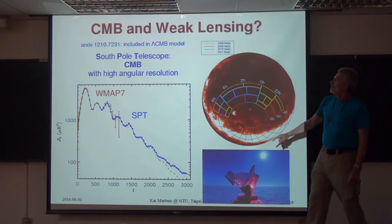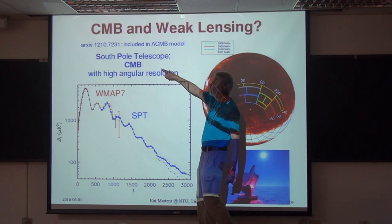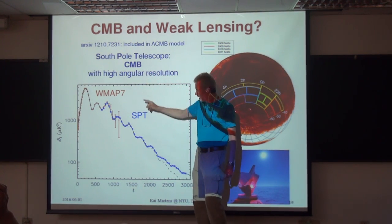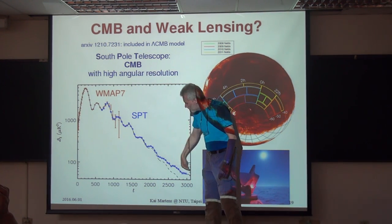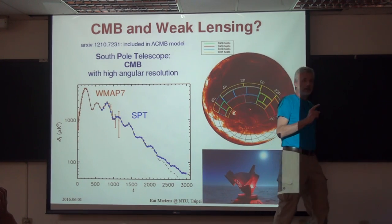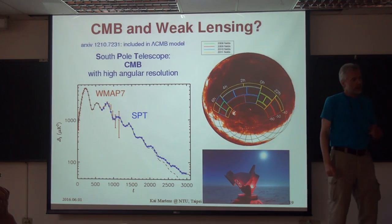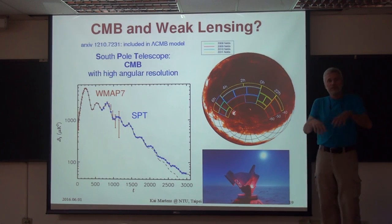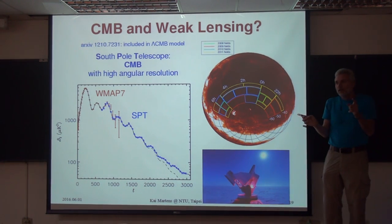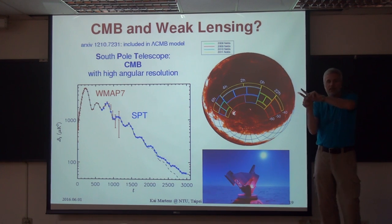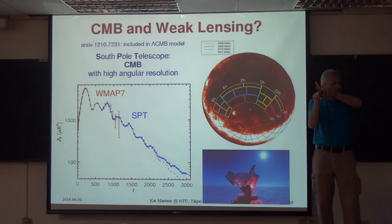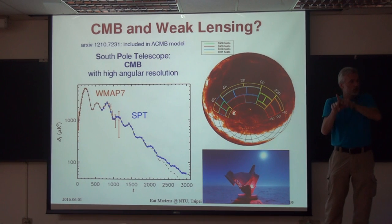A really nice corollary is that at the South Pole there is an infrared telescope that can measure even much further out than Planck. Why is Planck limited? Because of the angular scale - your pixel size determines how much resolution you have.